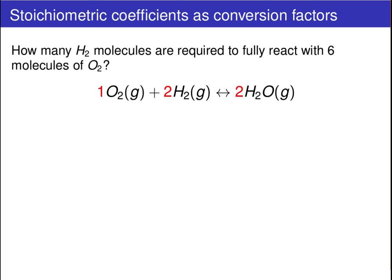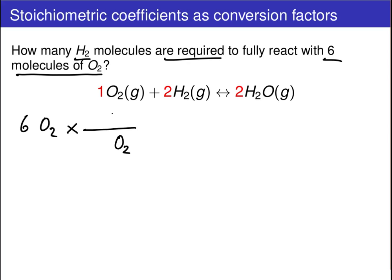Now, with this in mind, let's consider the following problem. Let's suppose we are starting off with six molecules of O2, and we want to determine how many hydrogen molecules are required to fully react our oxygen. Proceeding as we did before, we're going to start off with what we're given: six O2 molecules. We now need to convert from number of O2 molecules to number of H2 molecules, so H2 molecules will be in the denominator and H2 up top, and we then turn to our stoichiometric coefficients to figure out the exact numerical value of that ratio.